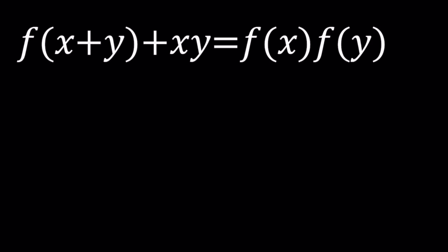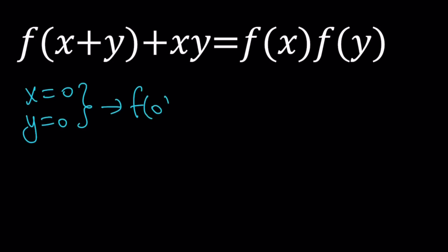Let's go ahead and work with this interesting equation. When solving functional equations, you should always try replacing x and y with certain values such as 0, 1, negative 1, and so forth. So we're going to do the same thing here. First of all, let's replace both x and y with 0. That gives us f of 0 plus 0 equals f of 0 times f of 0.